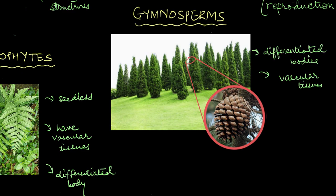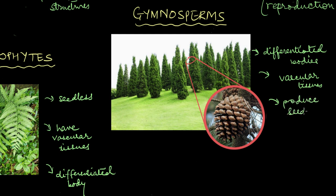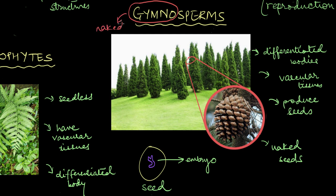Gymnosperms are more advanced than the pteridophytes. They have differentiated bodies, vascular tissues, and they can produce seeds. Each seed contains the growing embryo inside, keeping it protected and supplied with enough nutrition. In the right conditions, this seed will germinate into a new plant. But the thing about gymnosperm seeds is that they aren't covered with anything — they're naked. Gymno means naked and sperm means seed, so gymnosperms produce naked seeds. A very popular example of gymnosperms are the pine trees.